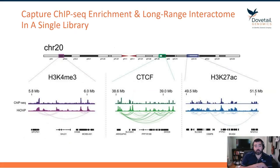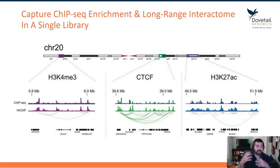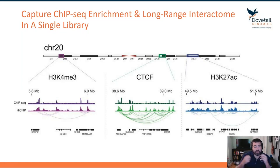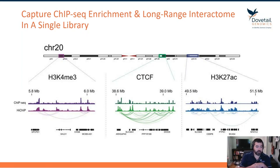Finally, the Hi-CHIP approach is really about pulling down and asking a question about the interactome from the viewpoint of a protein of interest. The big ones people tend to use are H3K4 trimethyl for active promoters, CTCF for chromatin boundaries, and H3K27 acetylation for enhancers. You can ask what is engaged with my promoter, or what is my enhancer engaged with, depending on the antibody route.